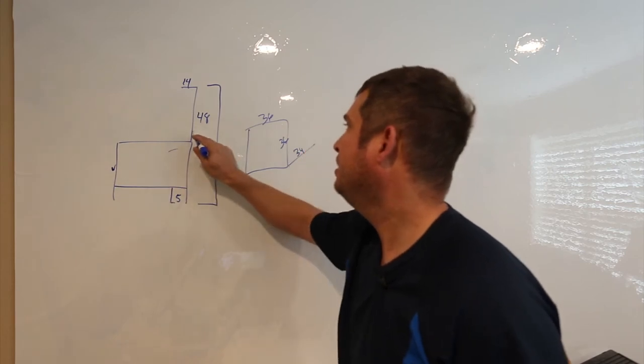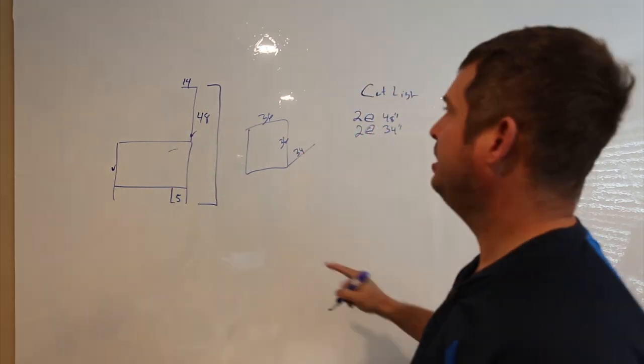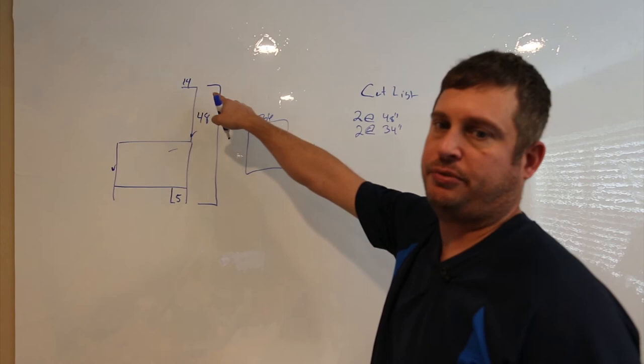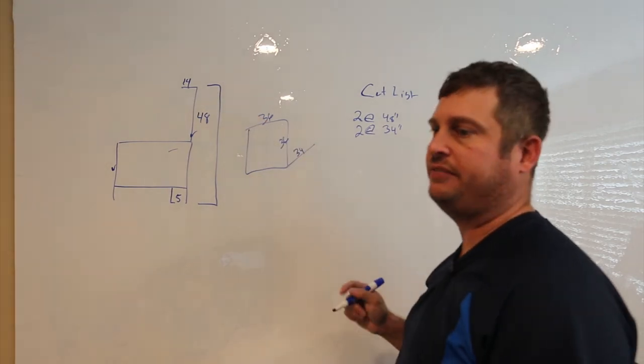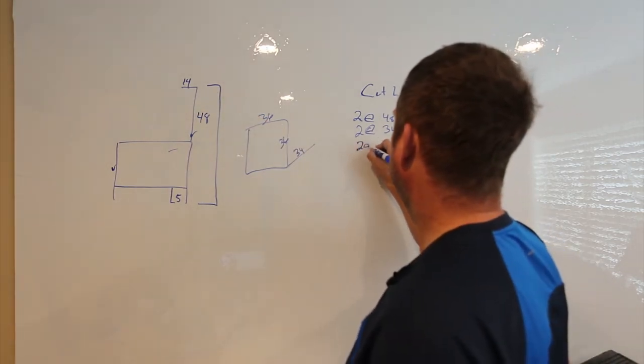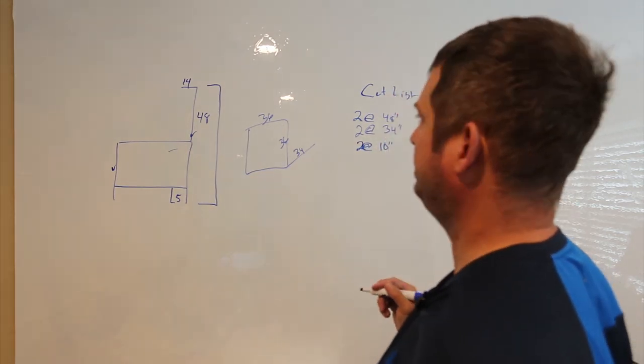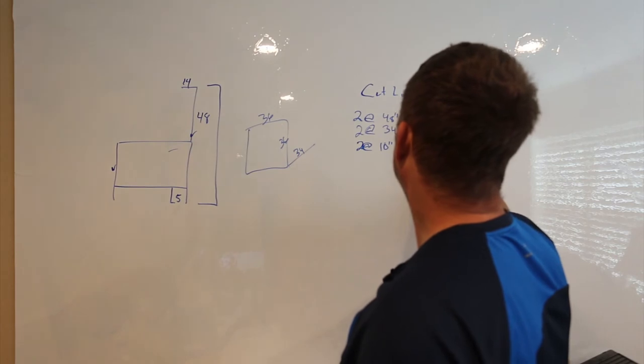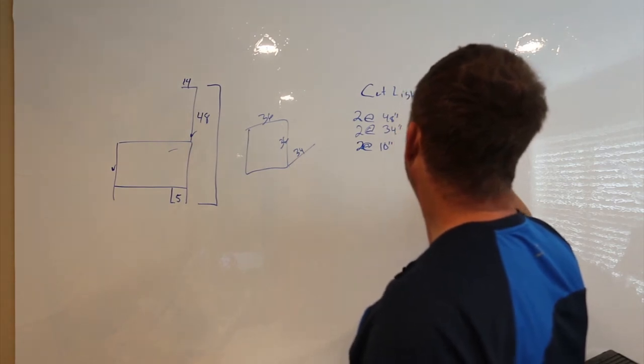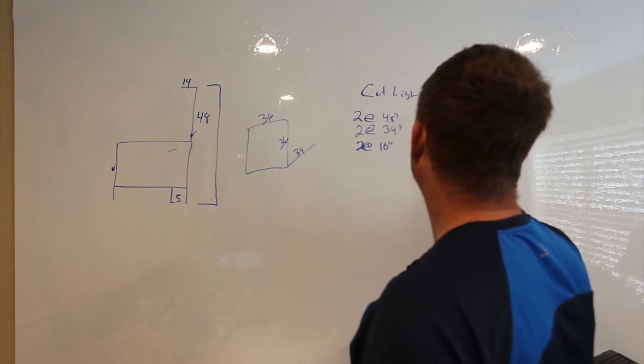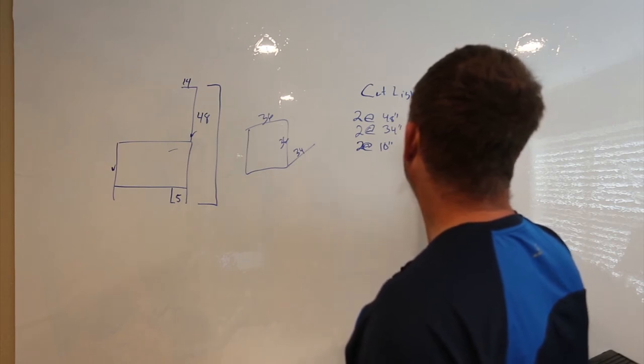That's gonna give me this and this. And now 14 minus three for two two-by-fours on either side gives me 11, and I'll make that a little bit shorter so I have a little overhang in the front. So two at 10 inches. Back legs, front legs, shelf.